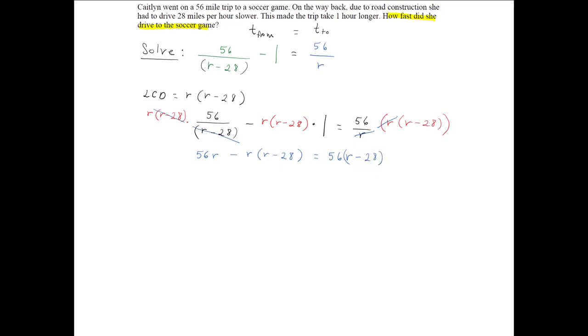And at this point, we can go ahead and simplify each side, combine like terms, and solve. So we get 56r minus r squared plus 28r equal to 56r minus 56 times 28, which is equal to 1568. Now we can see from this term here, r squared, we know that this is a quadratic equation.